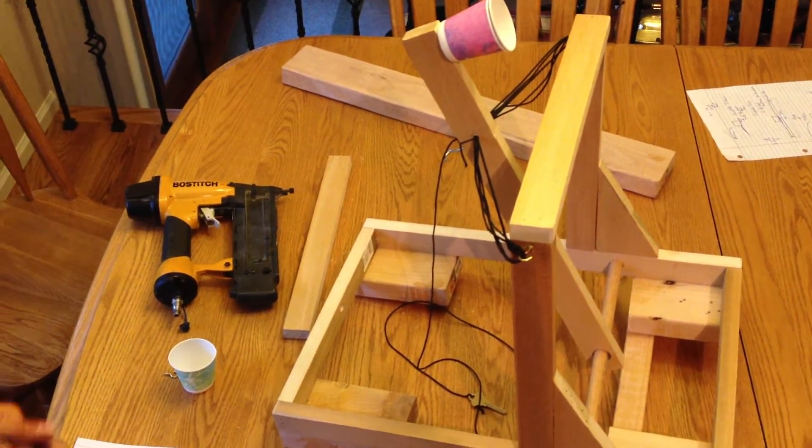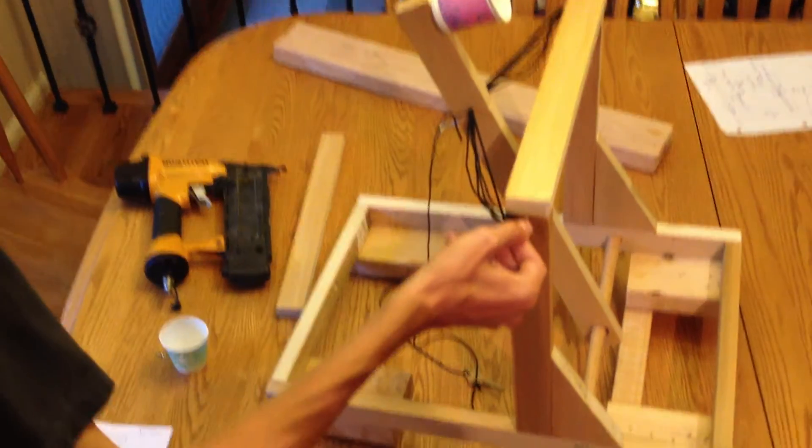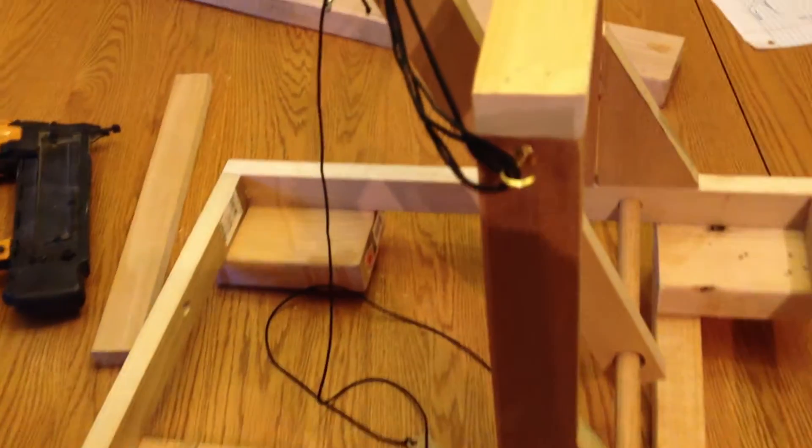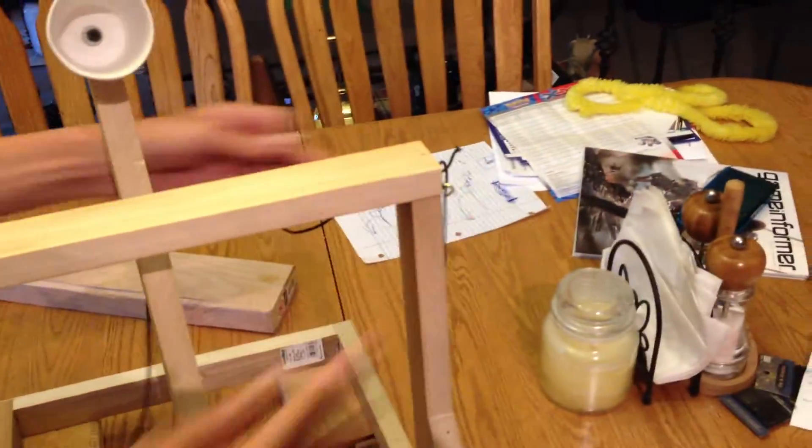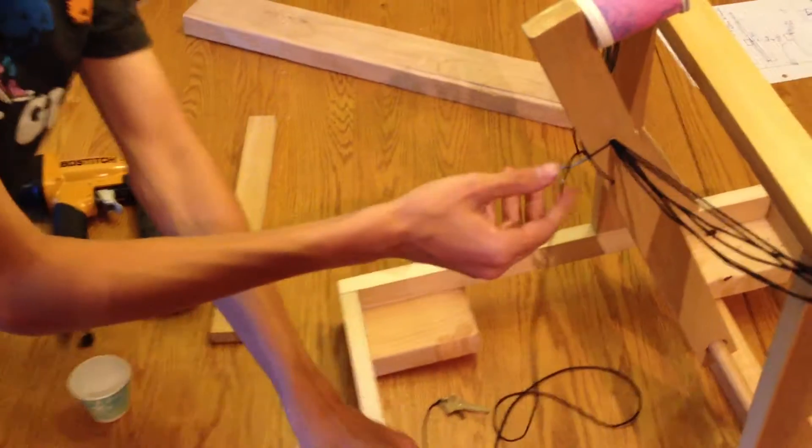For attaching all the strings together, I used two eye hooks on both sides of the catapult, there and there, and then I also used a larger one for the back right here.